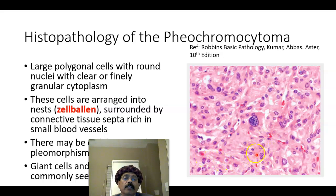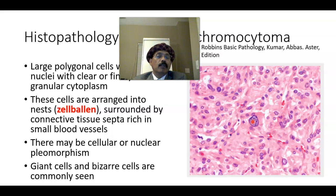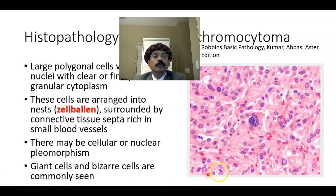The supporting cells are called sustentacular cells. These are the nests of cells — the chief cells — associated with pheochromocytoma, with a connective tissue stroma containing blood vessels. We may also see giant cells and bizarre cells in the histological image; however, this does not necessarily indicate malignancy — even a benign tumor may invade the capsule or blood vessels. Only when the tumor metastasizes to other organs such as the liver or lymph nodes can we call it a malignant pheochromocytoma, which is present in only 10% of cases.